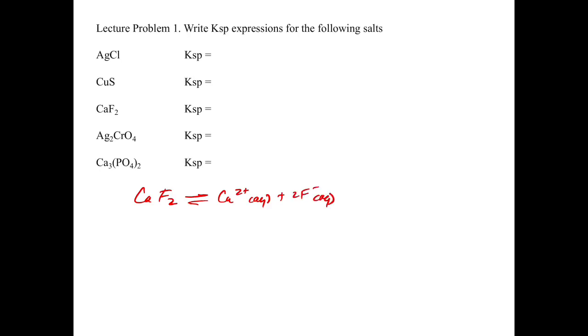When we write out the KSP expression for calcium fluoride, we have to take into consideration the fact that there's 2F-. The KSP is Ca2+ times the concentration of F- squared. We have to make sure we take that 2 into consideration.